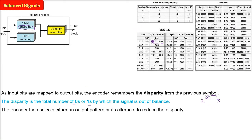The encoder will select either an output pattern or the alternate to reduce the disparity. It may use 1011 for 000 or it may use 0100 for 000.